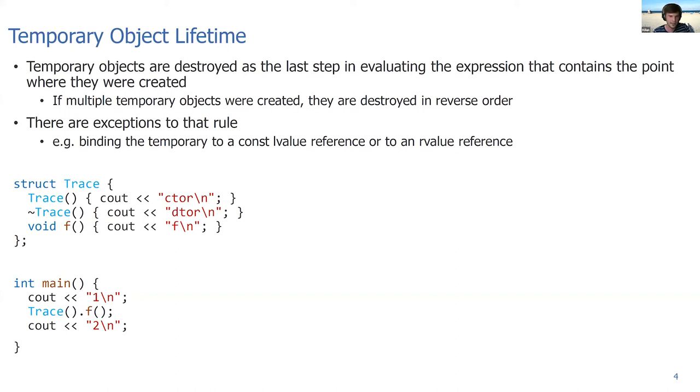There's an example. We have a type called trace which prints C'tor in the constructor and D'tor in the destructor, and has a member function called F which just prints F. In the main function, we print first one, then construct a temporary trace object, call F, and afterwards print two. If we execute that program, the output is one C'tor F D'tor two, which probably is no surprise. It's how the language is designed. They could have designed it differently, that the temporary object would live to the end of a scope, but that's not how it's working. The temporary object gets destroyed at the end of the expression.